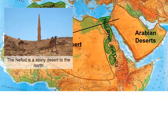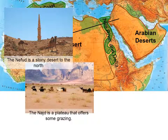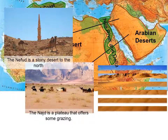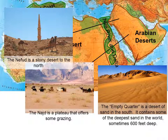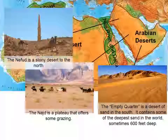In the north of the Arabian Peninsula, you have the Nefud, which is a stony desert. In the middle, you have the Naj, which is a plateau that offers some grazing — a few more people live here than in the other deserts. In the south is the Empty Quarter, a desert of sand where almost no one lives. It contains some of the deepest sand in the world, sometimes 600 feet deep.